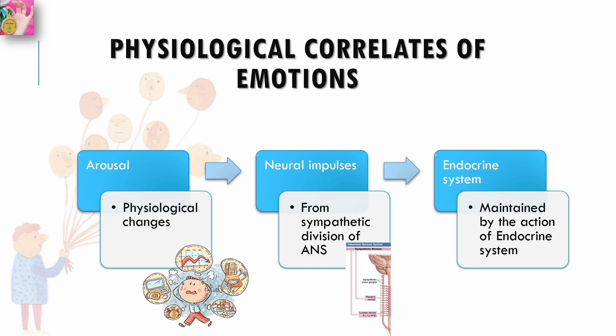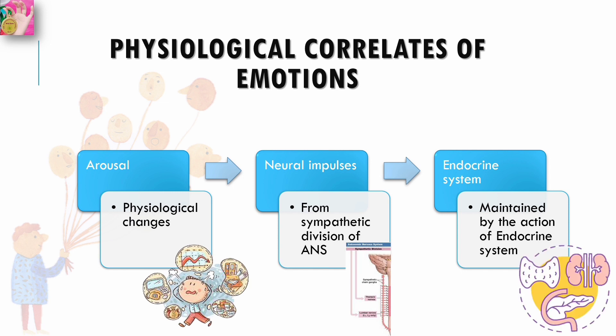The physiological changes involved in arousal are stimulated by neural impulses from the sympathetic division of the autonomic nervous system, but they are maintained by the action of the endocrine system — a series of glands which release hormones into the bloodstream, helping to maintain a consistent state within the body. The hormones concerned with stress and arousal are released from the pituitary and adrenal glands following stimulation from the sympathetic nerve fibers of the autonomic nervous system.